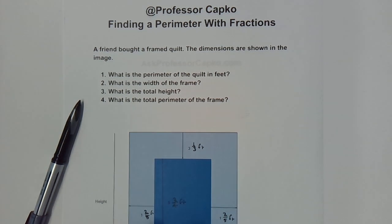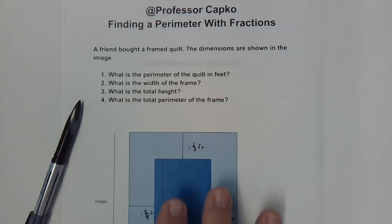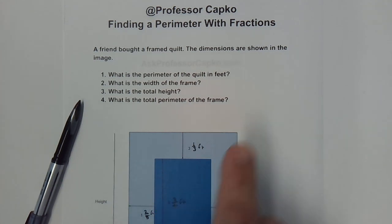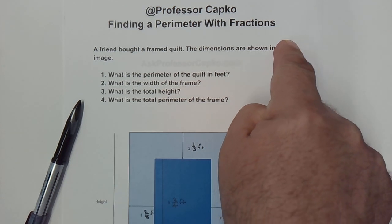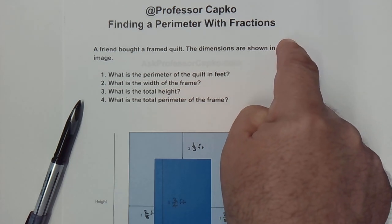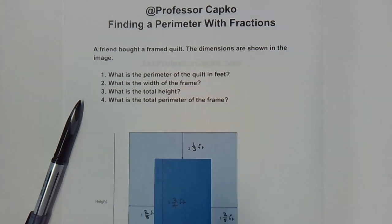In this problem we're trying to find the perimeter and there are fractions, so let's look at how to deal with that. I do have an earlier video on adding and subtracting fractions and you may want to start with that one. I've linked it up in the corner because that will cover the adding and subtracting of fractions portion. I'll do some of that here but I may speed through it, so if you want more detail take a look at that video.